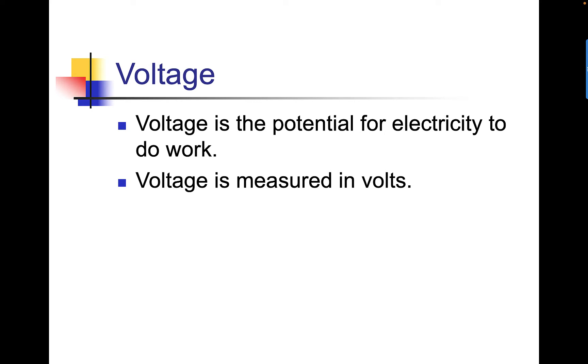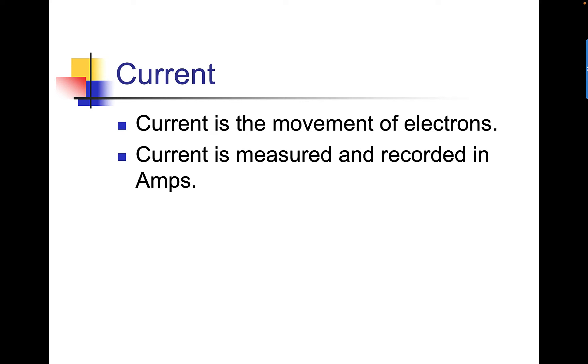Voltage is the potential for electricity to do work. Voltage is measured in volts. Current is the movement of electrons. Current is measured and recorded in amps.